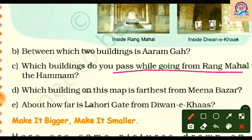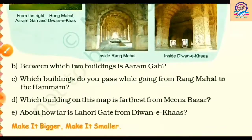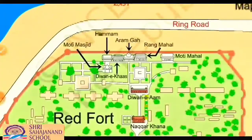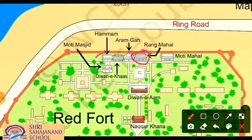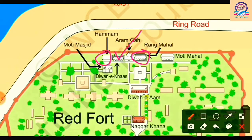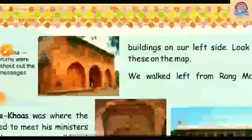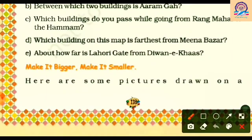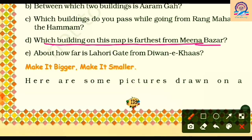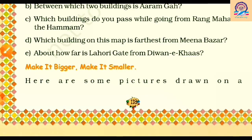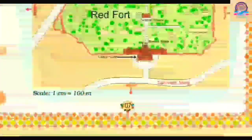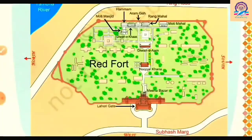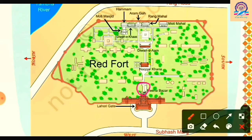Next question: which buildings do you pass while going from Rang Mahal to Hammam? From the map, we pass through Aram Ghaa and Diwane Khaas. Then: which building on this map is farthest from the Meena Bazaar? From the map, we can see that four or five buildings in the upper area are farthest from Meena Bazaar.